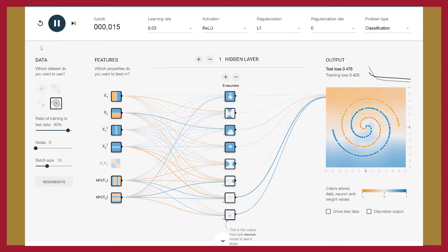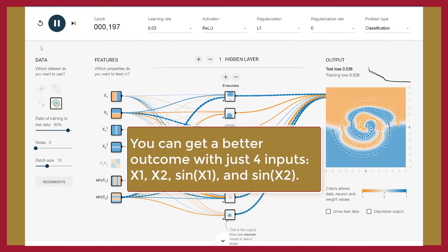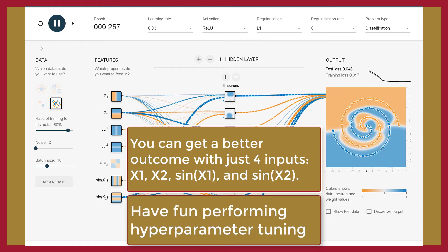Finally, I reverted to my model with six input features and changed the regularization to L1, and that gave me the best result. The test loss was 0.028 and the training loss was 0.004 after about 700 epochs.